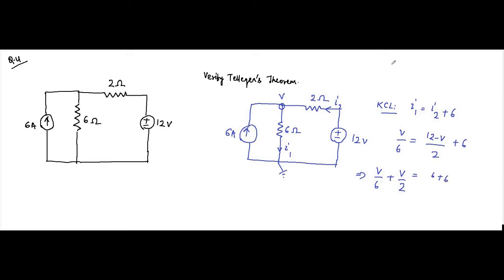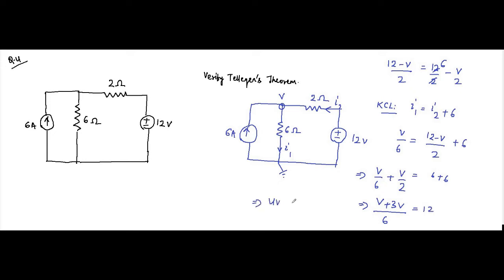Rearranging: (12 minus V)/2 becomes 12/2 minus V/2, so V/2 moves to the left side. This gives (6V + 3V)/6 = 12, that is 4V = 72, which implies V = 72/4 = 18 volts.